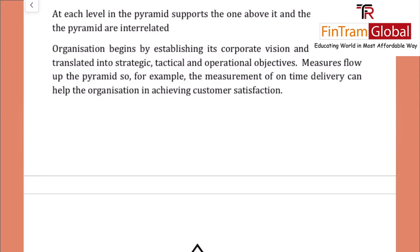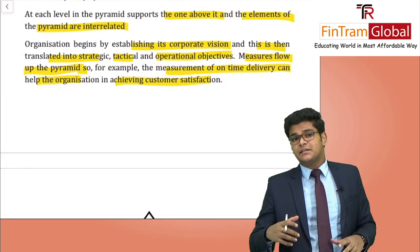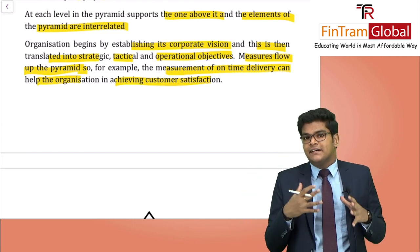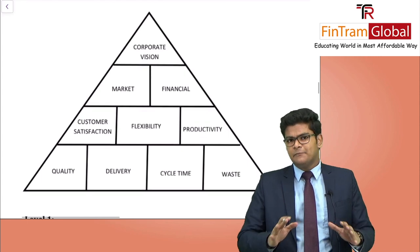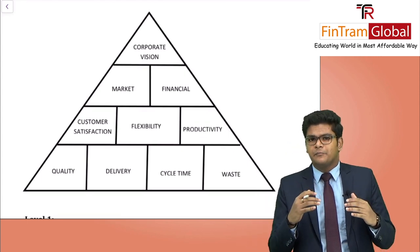At each level in the pyramid, it supports the one above it and the elements of the pyramid are interrelated. The organisation begins by establishing its corporate vision, which is then translated into strategic, tactical, and operational objectives. Measures flow up the pyramid — for example, the measurement of customer satisfaction flows upward. Let's look at the figure, which looks exactly like a pyramid with a lot of bricks in it.